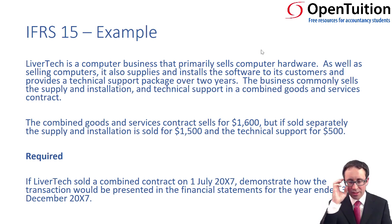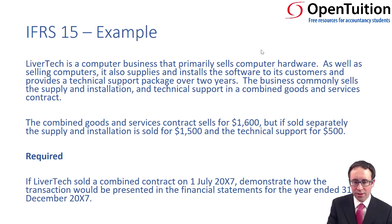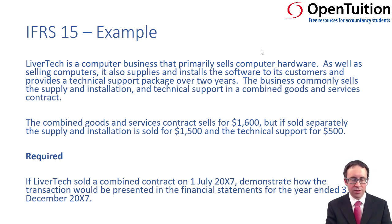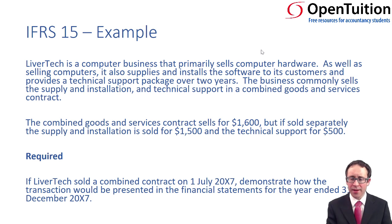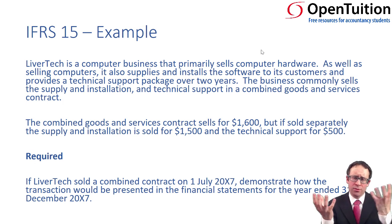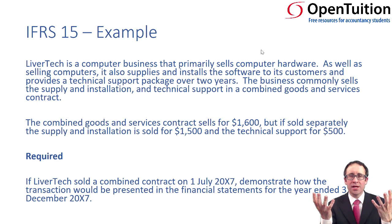The background to the scenario is fairly similar to one of the earlier illustrations. You've still got Libotech selling computers. They also supply and install software, and the technical support package is over two years. The business commonly sells the supply, installation, and technical support in a combined goods and services contract. We then need to identify the two performance obligations: the software installation and the technical support.